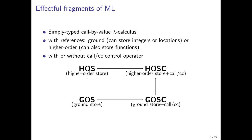All the fragments we consider have mutable stores represented by local references, as found for example in OCaml or standard ML. In the simpler fragments, these references can store integers or locations, but not functions — not higher-order values. This is the GOS fragment. Then we consider fragments where higher-order values, that is functions, can also be stored — this is the HOS fragment. Finally, we consider another kind of effect, control operators represented by call-CC, giving rise to GOSC and HOSC fragments.